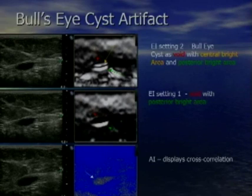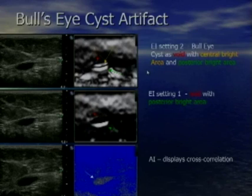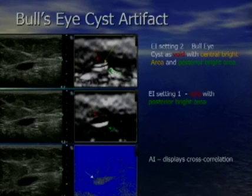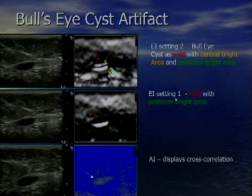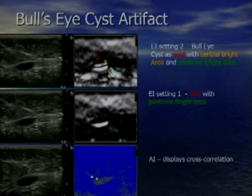If you're using different systems, check with your manufacturer to confirm the bullseye artifact occurs on their system. On a Philips system with multiple elasticity settings: setting number 2 gives the classic bullseye appearance — white central dot, black lesion, white peripheral zone. Setting number 1 shows the lesion as black without the central white spot but with the peripheral white zone. They also have an anechoic imaging setting where cystic contents show up as yellow on a black background.